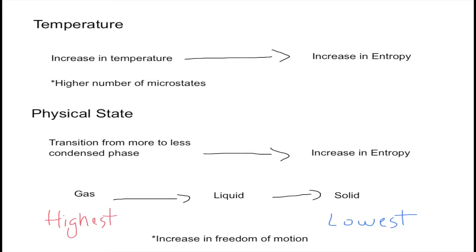A solid has pretty much no freedom of motion, and when compared to a gas, a gas can move pretty much anywhere. You can think of a rock when you think of a solid — the particles can't really move anywhere, whereas a gas in a container can just bounce around everywhere, so that increases the disorder of the system.